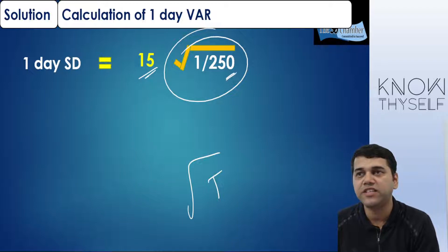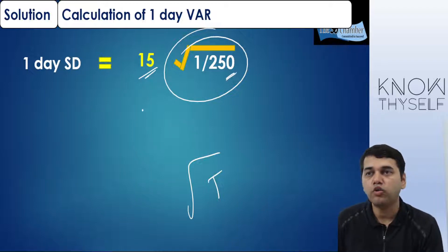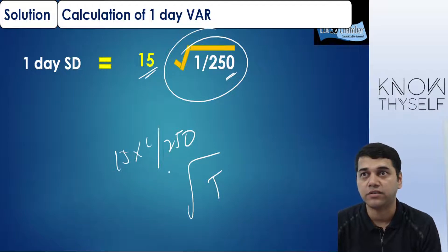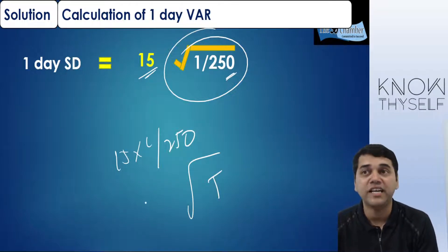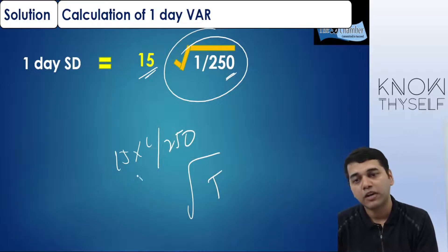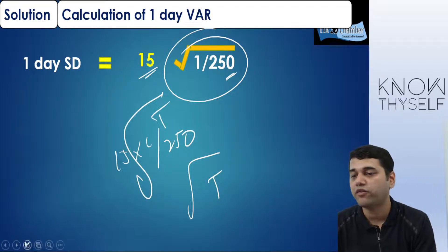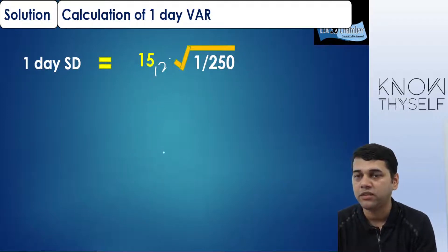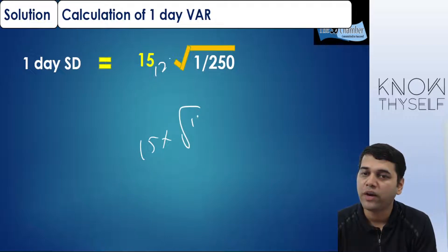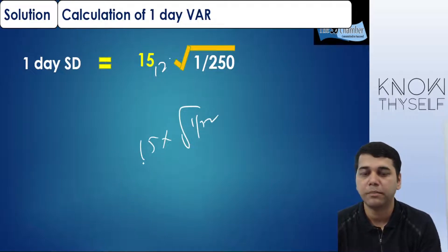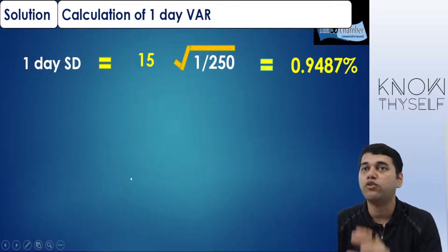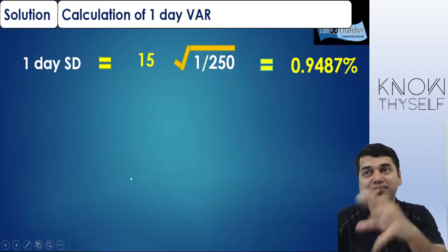It is the standard deviation per annum, not one day. So how to find out one-day standard deviation? I cannot do 15 × (1/250) — that is not possible. I can do it for variance, not for standard deviation. The only way is to find proportional standard deviation per day by doing σ × √t. So if I want per month: 15 × √(1/12) = 0.9487. This is one-day standard deviation when finding value at risk for any one day.